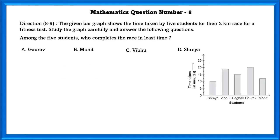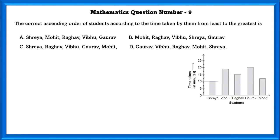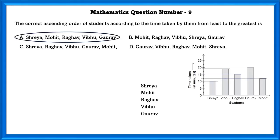Mathematics question number 8. The given bar graph shows the time taken by 5 students for their 2 km race for a fitness test. Among the 5 students, Shreya completed the race in the least time. The correct ascending order of students according to time taken from least to greatest is: Shreya, Mohit, Raghav, Vibhu, Gaurav — that is option A.